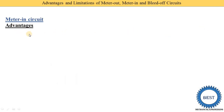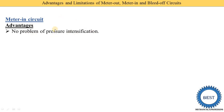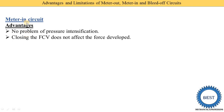Advantages of the meter in circuit: First, there is no problem of pressure intensification. In a meter out circuit, pressure intensification was a disadvantage, but not here. Second advantage: closing the flow control valve does not affect the force developed. In a meter out circuit, closing the FCV reduced the force developed, but in the meter in circuit, force is not affected by closing the FCV.